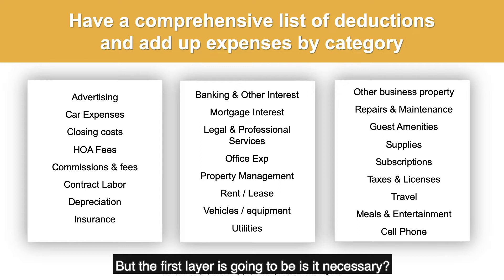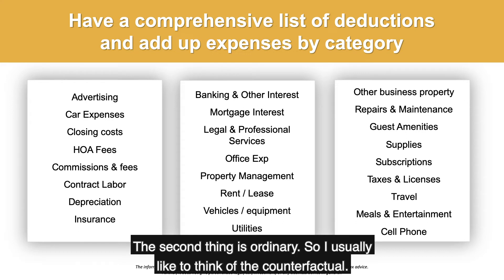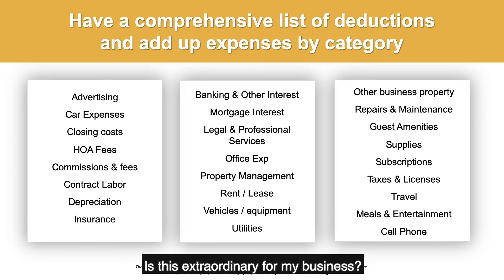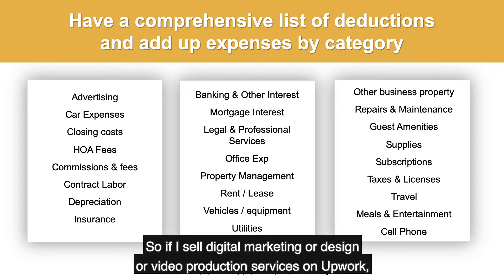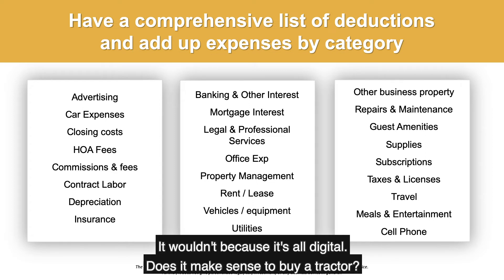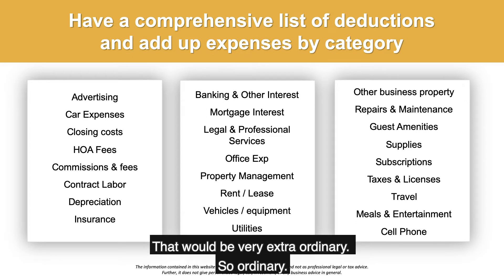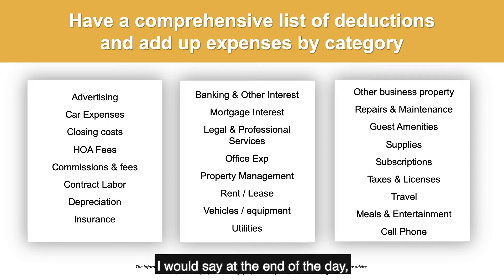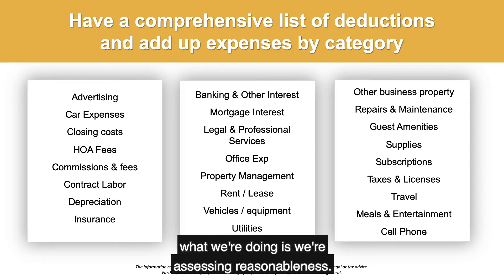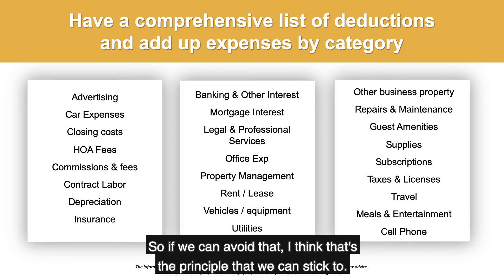The first layer is: is it necessary? That doesn't mean could you live without it — it means is it part of the input-output for you to grow your business. The second thing is ordinary. Is this extraordinary for my business? If you sell digital marketing or design or video production on Upwork, does it make sense to buy a truck? Not for that digital business. A tractor would be even more clearly extraordinary. So what we're doing is assessing reasonableness — you can't get things exactly right, but you can get things exactly wrong.